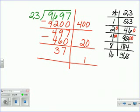And 23 goes into 37 one time. 1 times 23 is 23. If I subtract, I have 14. 14 is less than my divisor, so I'm done with the problem.